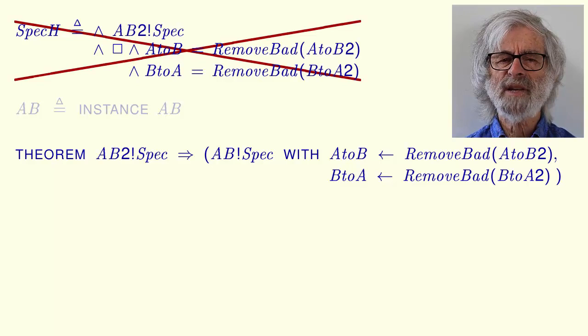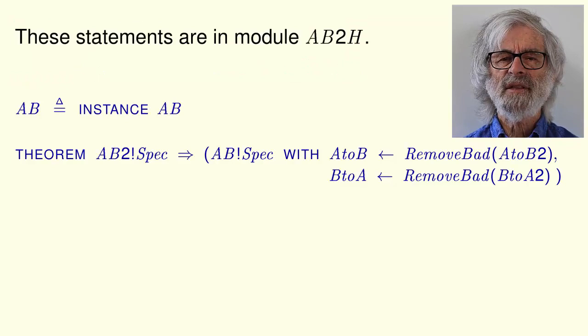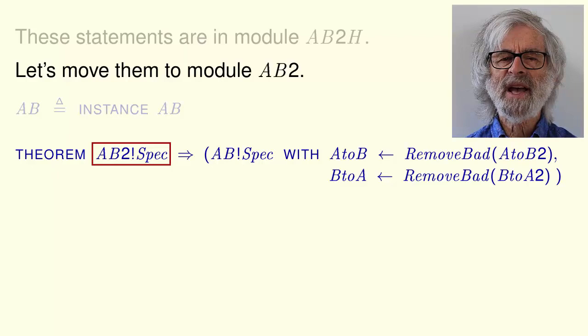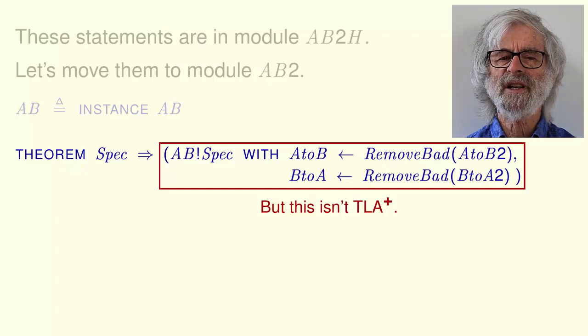First, notice that spec H doesn't appear in the theorem anymore, so we don't need to define it. The instance statement and the theorem are in module AB2H. Let's move them to module AB2. When we do that, the formula called AB2 bang spec in module AB2H is simply called spec. Inside module AB2, spec is an ordinary specification that TLC can handle.